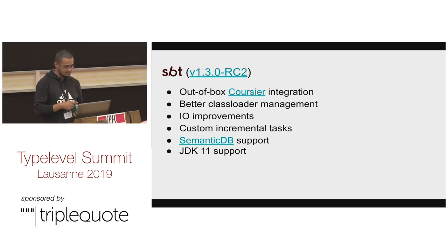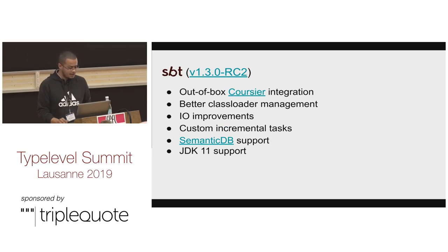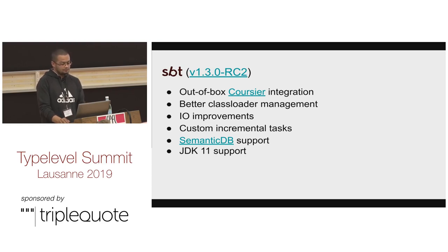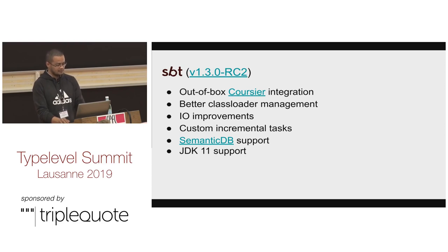In regards to build tools news, SBT got a release 1.3, which is really faster since it integrates Coursier for library management — similar to Ivy, but written in pure Scala. It allows parallel downloads for all the dependencies you have, and also has improvements in class loader management and the IO process.